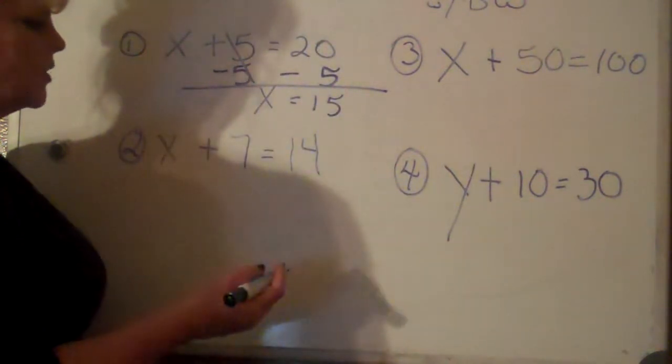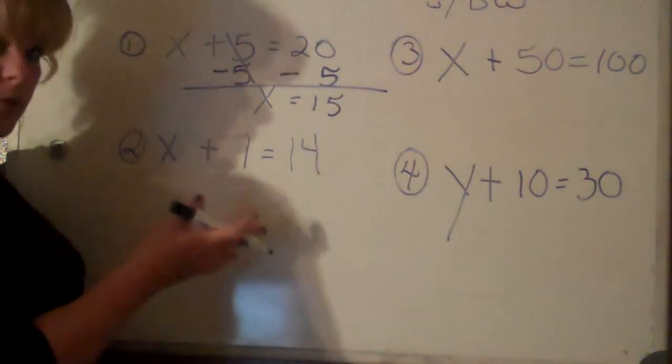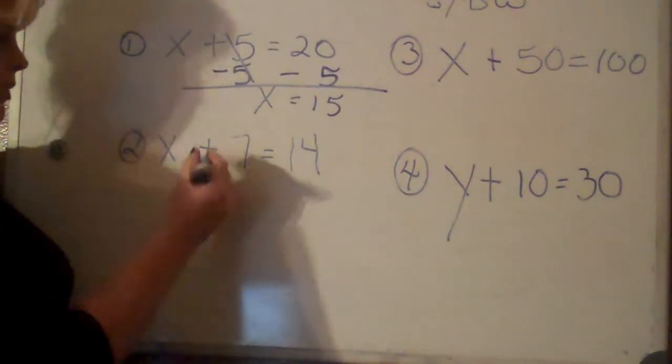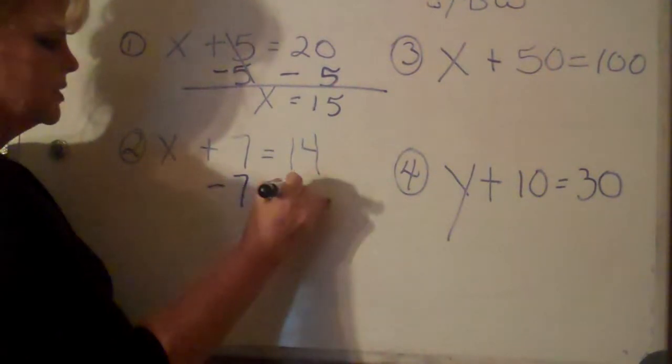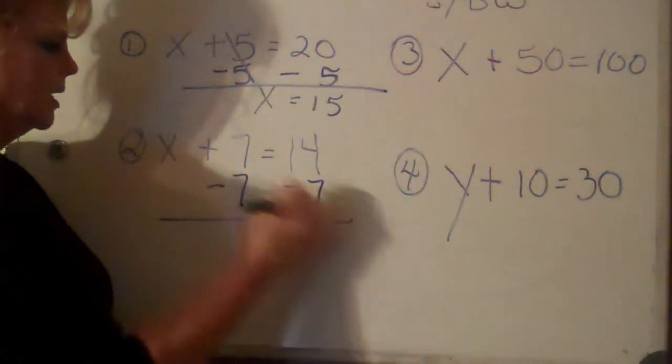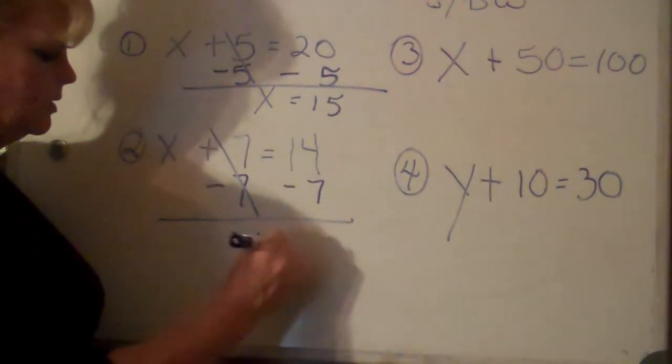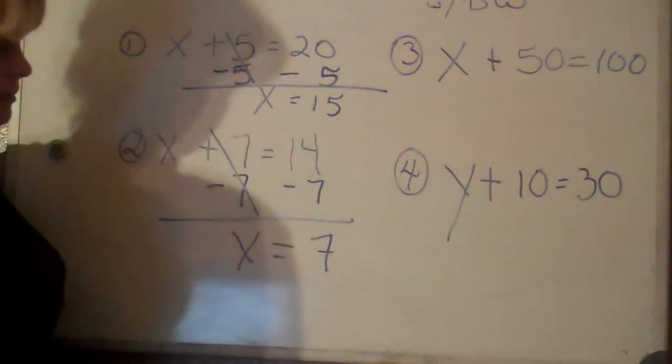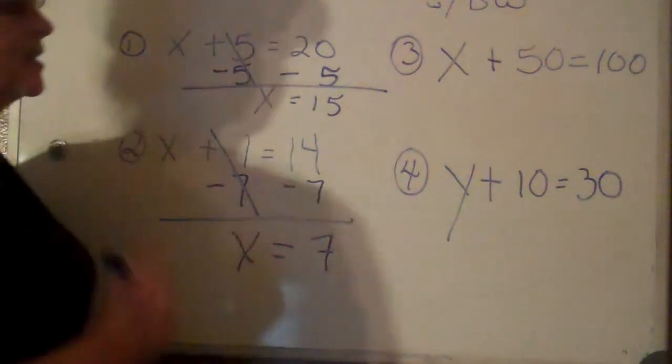Number 2: x plus 7 equals 14. What you want to do here is the same thing. There's a constant, your number. You want to do the opposite on both sides. This cancels, x comes down, equals, and that's going to equal 7. And then you want to plug it in as I said.